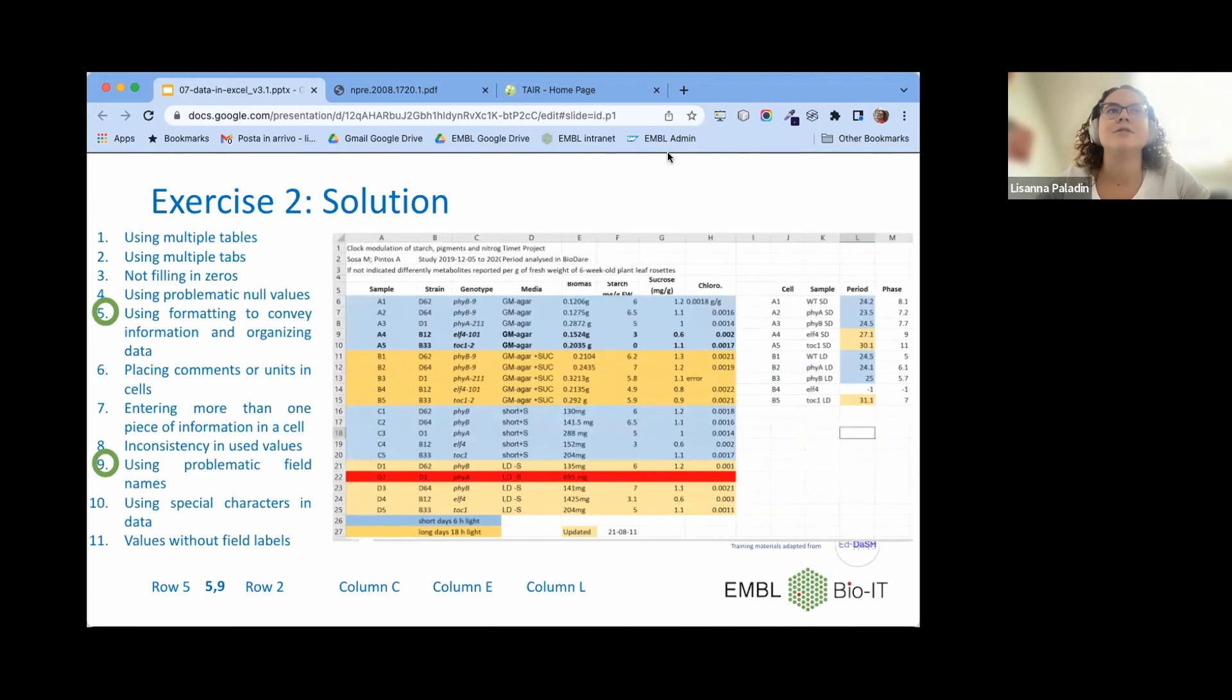So using row five includes both formatting to convey information and organizing data because of the bold and color, and using problematic field names like the fact that we have sample here and sample here and sample there. And the fact that sample here is also cell here, and so on. Row two is linked to entering more than one piece of information yourself. So here the study includes the data and both dates, start and end dates, and it also includes two different authors just in the same field but divided by a symbol.